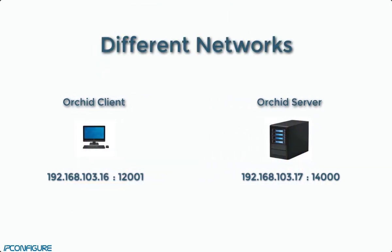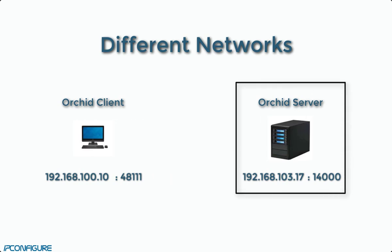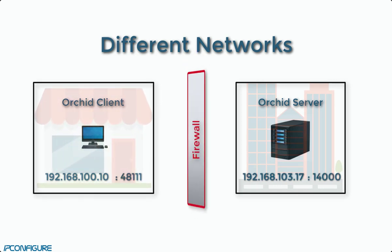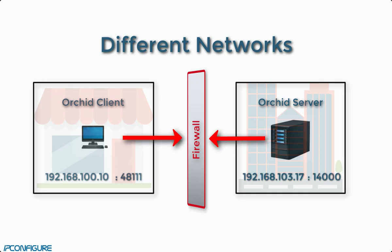Now, working with the same Orchid Core VMS server at your headquarters — you are monitoring your security cameras using a desktop, the client, at a satellite location which is on a different network. When the devices are on different networks and one or both of them are behind firewalls, this direct connection will fail.